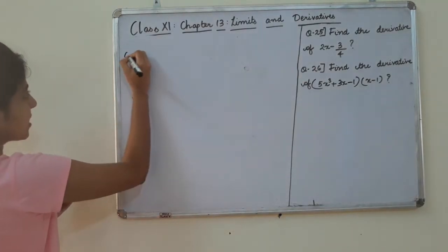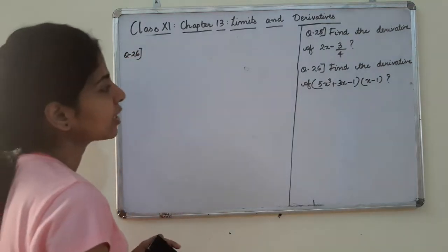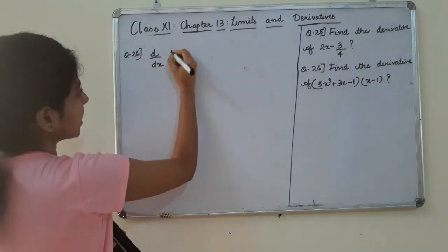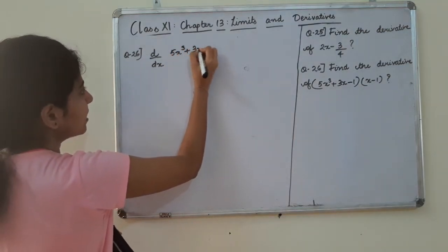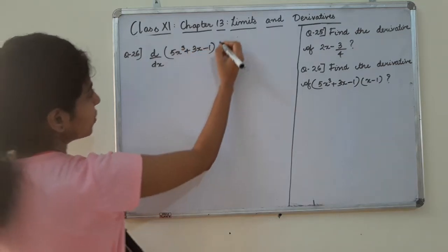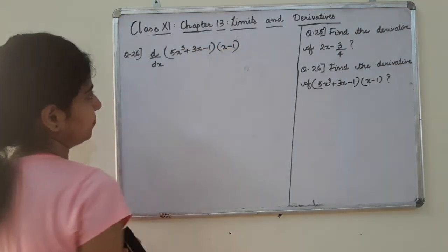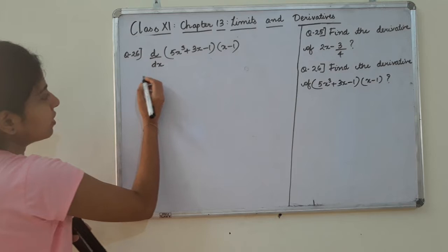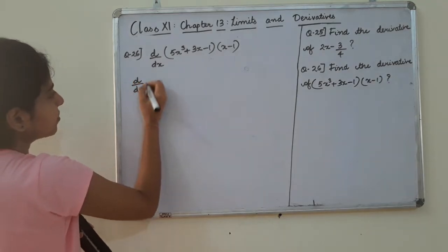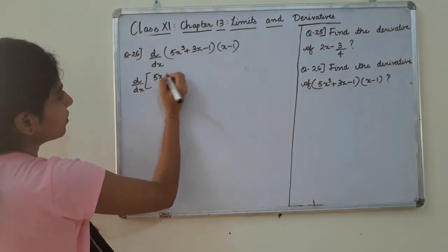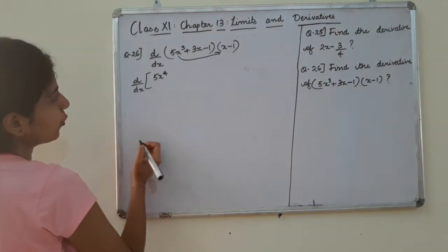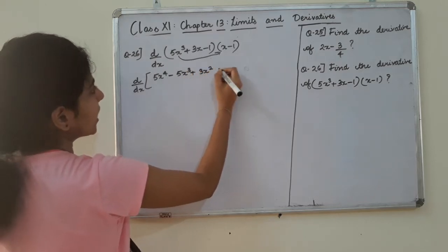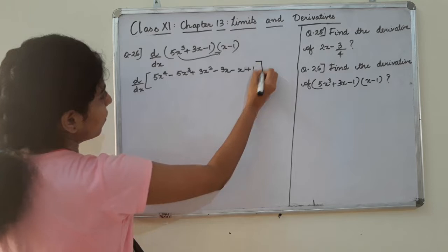Question number 26. We need to find the derivative. The derivative of 5x cubed plus 3x. This is 5 times 3x squared, which gives 15x squared. We need to remember the values with the power rule applied. The expression is: derivative of (5x raised to 4 minus 5x cube plus 3x square minus 3x minus x plus 1).